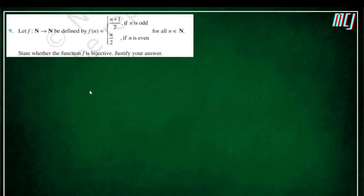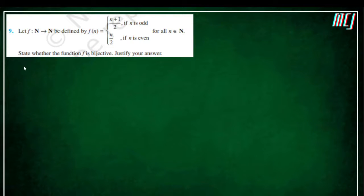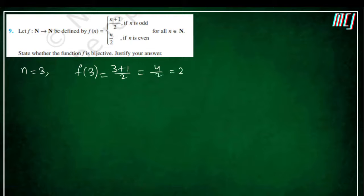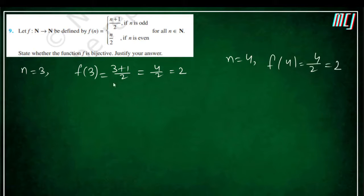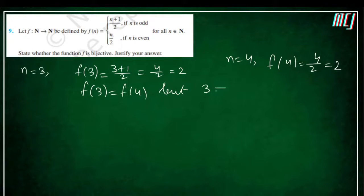Moving to the next question — we need to check whether the function is bijective or not. The function is defined for two different conditions: when n is odd and when n is even. Let's take n = 3 (odd): f(3) = (3+1)/2 = 4/2 = 2. Take n = 4 (even): f(4) = 4/2 = 2. So f(3) = f(4), but 3 ≠ 4. Therefore f is not one-to-one.